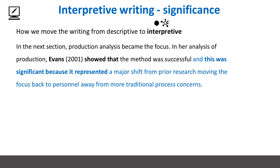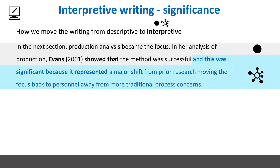Look at this example. Take 30 seconds to read it and look at what's going on. As suggested by the color we're using, the first part is descriptive — it's what Evans showed. The second part is interpretive, because we're saying here Evans showed this, that the method was successful, and this was significant because.